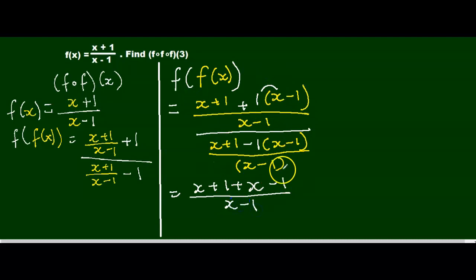This fraction divided by that fraction. So I'm going to use my dividing fractions property. So I'm going to multiply that by the reciprocal of my denominator. So this denominator becomes the numerator, and then I'm going to distribute that. It becomes x plus 1 minus 1 times x gives me negative x, and then negative 1 times negative 1 gives me positive 1.